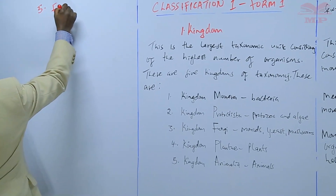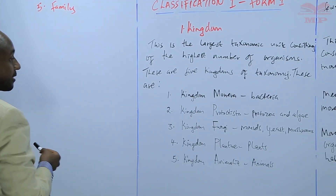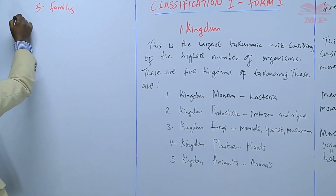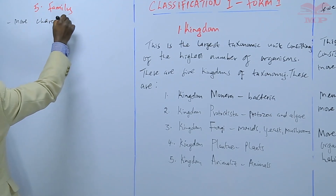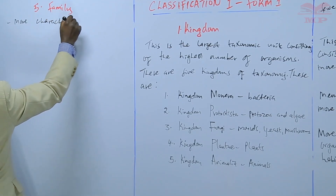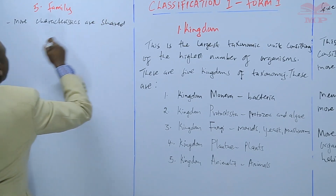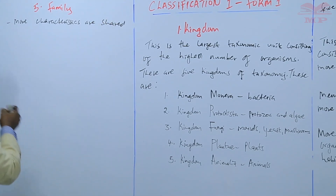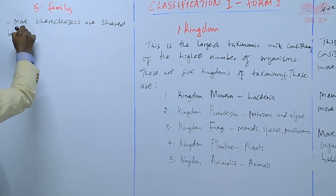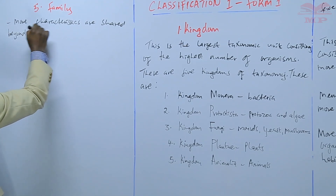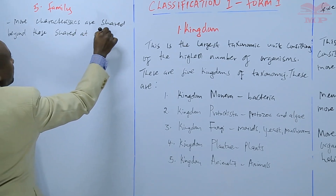Number five, we have family. At the family level, more characteristics are shared beyond those shared at the order level.